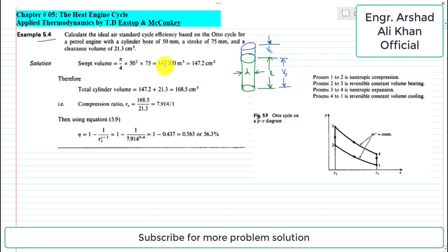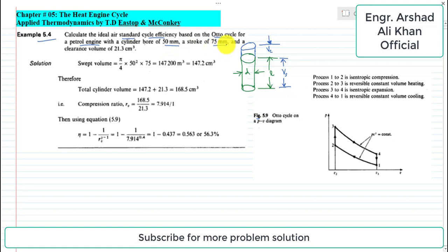Calculate the ideal air standard cycle efficiency based on the Otto cycle for a petrol engine with a cylinder bore of 50 millimeters, a stroke of 75 millimeters, and a clearance volume of 21.3 cubic centimeters.